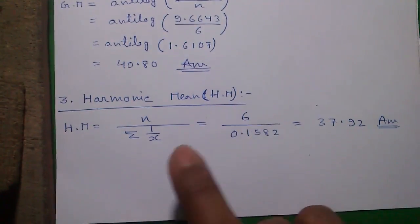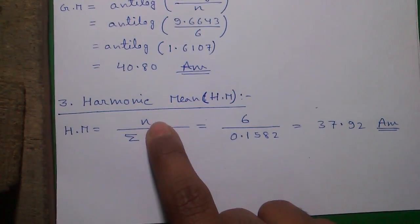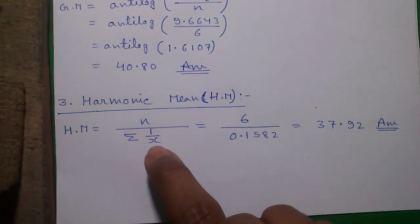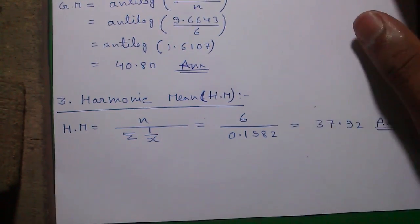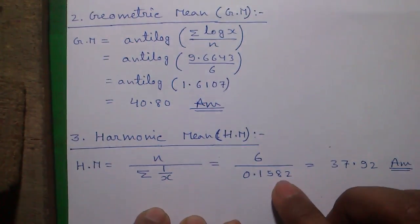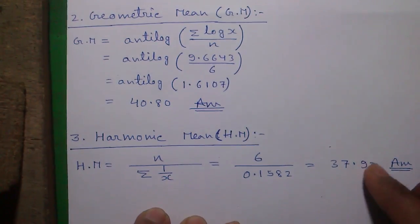Next, the harmonic mean. The harmonic mean is given by n divided by sum of all 1 divided by x values, which is 6 divided by 0.1582, which is 37.92.